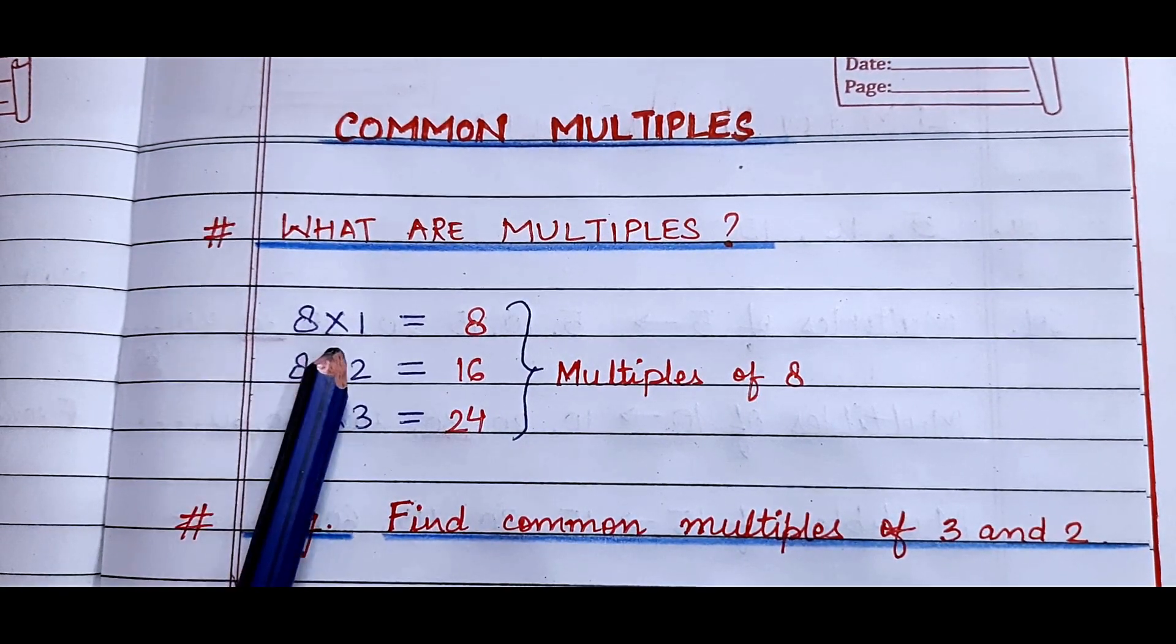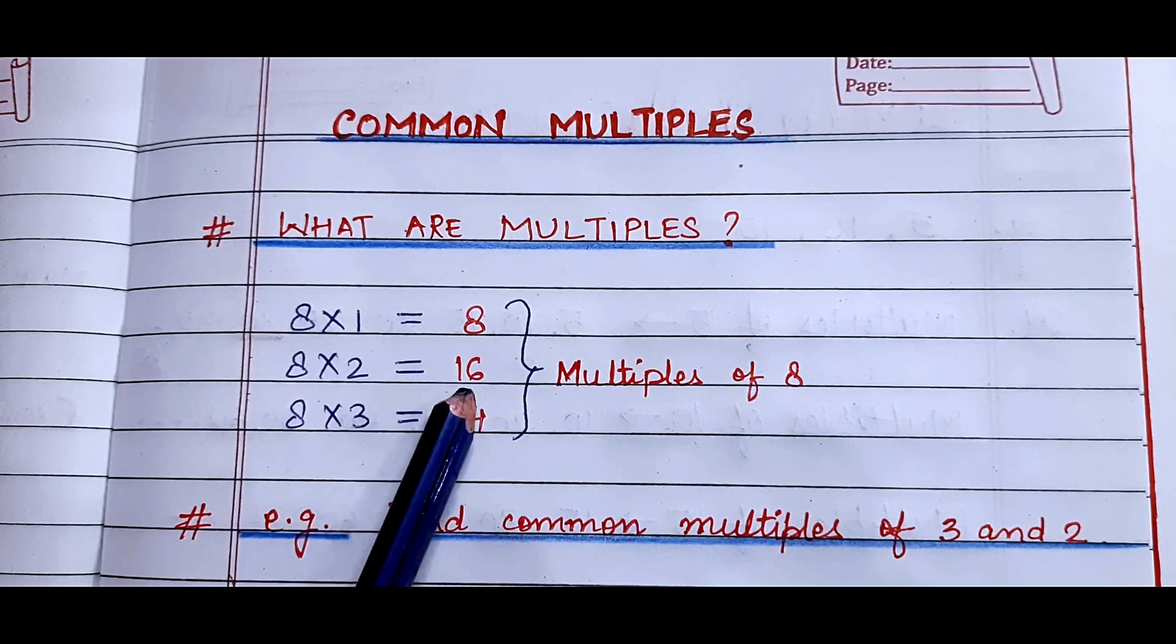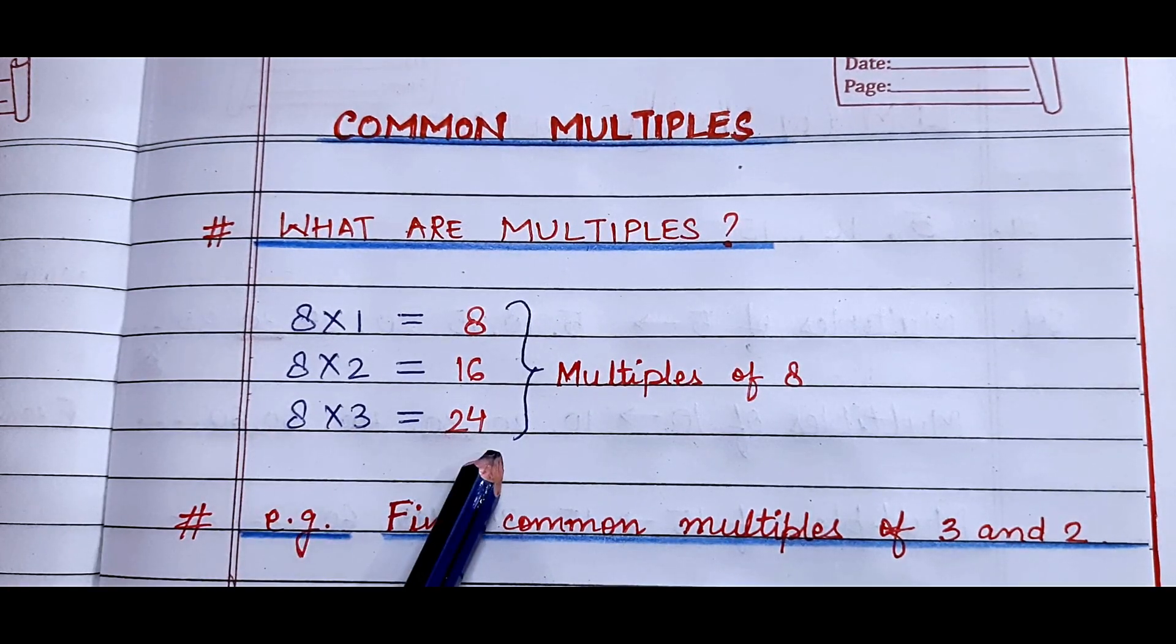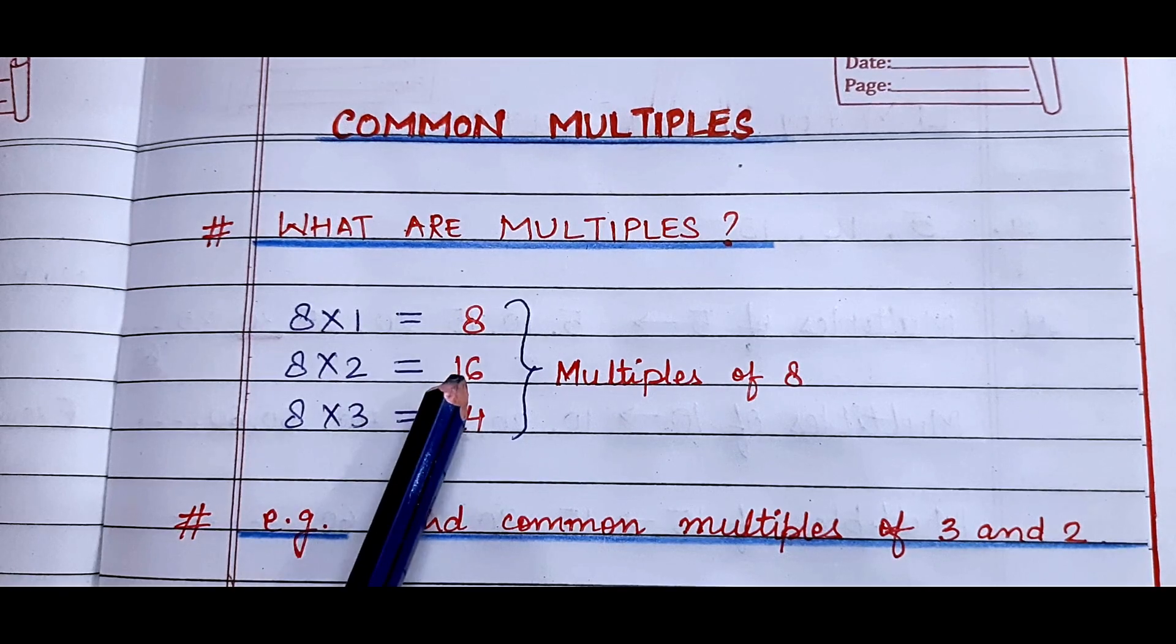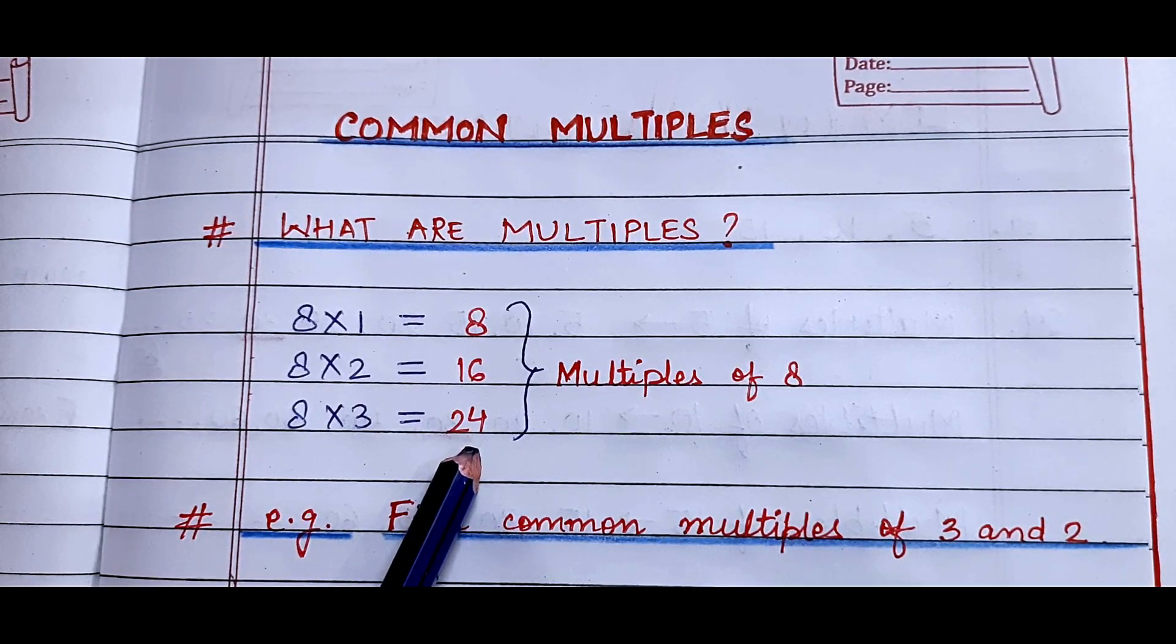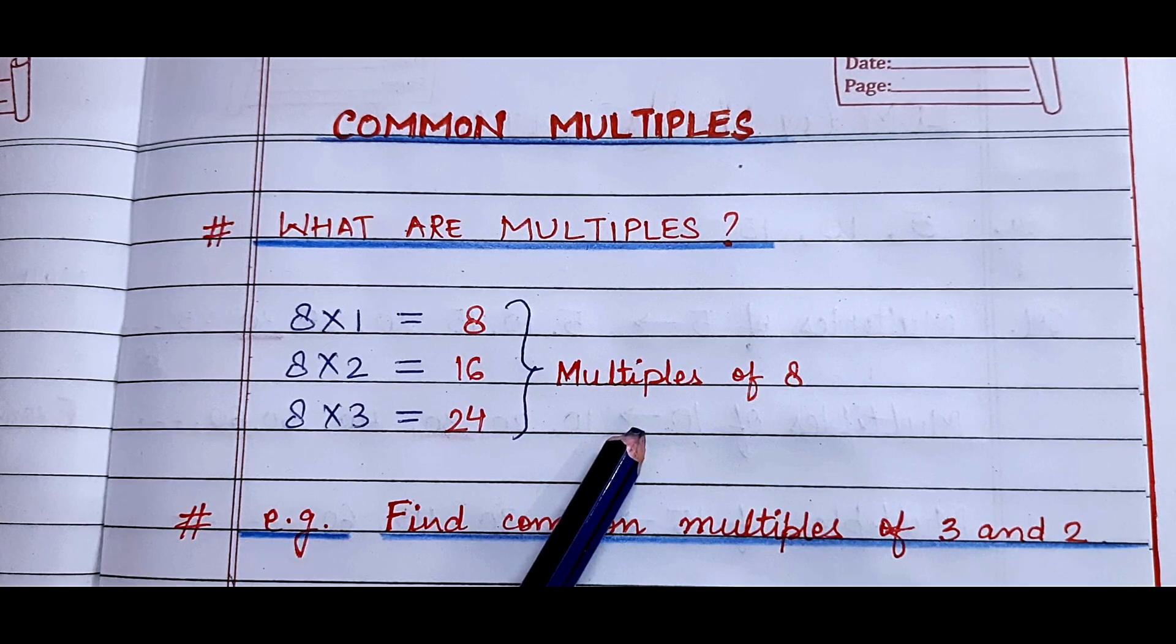See for example, 8 times 1 is 8, 8 times 2 is 16, 8 times 3 is 24. So here 8, 16, 24 are the first 3 multiples of 8.